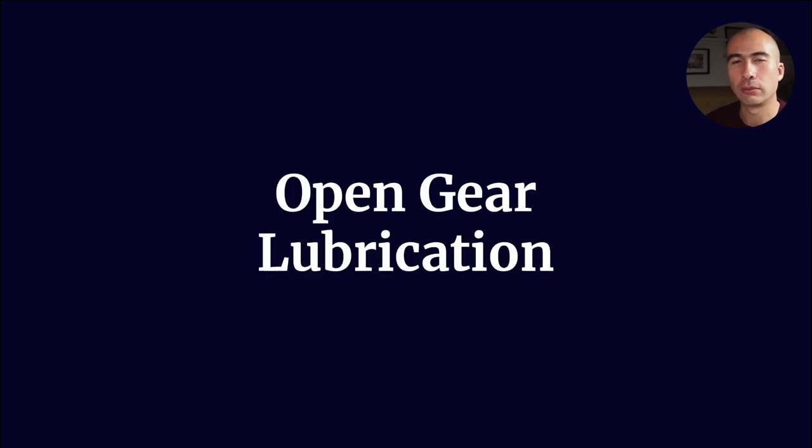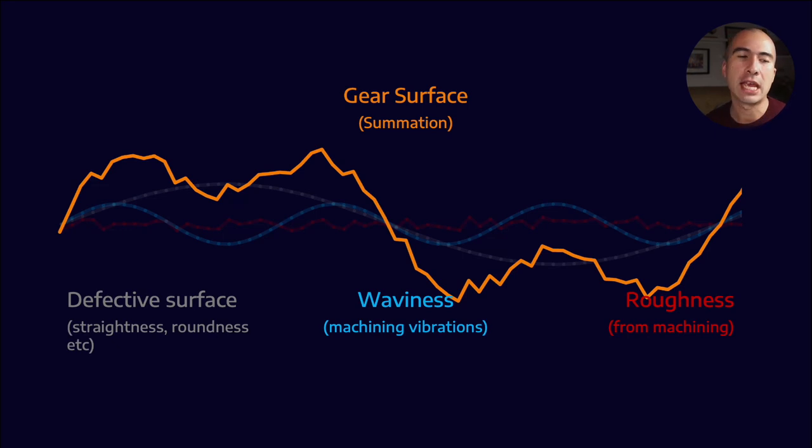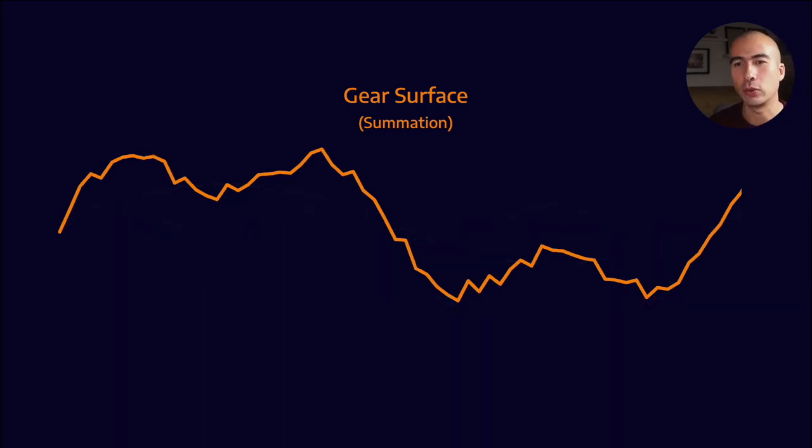Let's talk open gear lubrication. So in the previous lesson, we talked about the idea that the gear surface is the summation of all the different things that go into manufacturing. There is the defective surface, there is the waviness that's brought about by machining vibrations, as well as the roughness that simply comes about from the actual machining process itself. And when you sum all of these waves together, what you effectively get is the final gear surface.